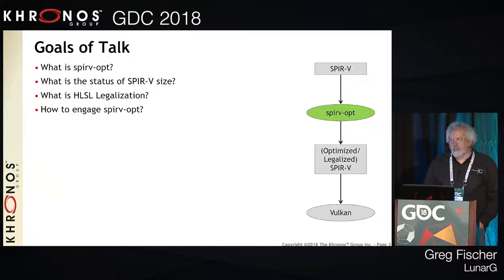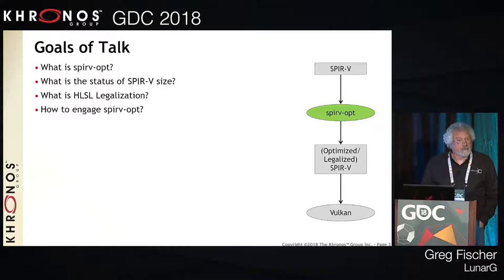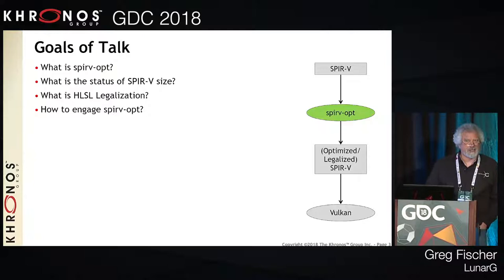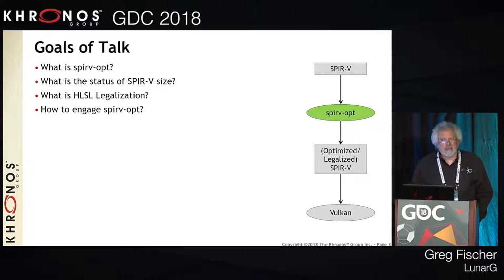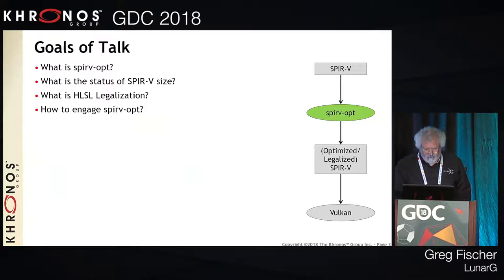The goals of the talk are to answer the following questions: What is SPIR-V Opt? What is the status of SPIR-V size these days? What is HLSL legalization, and why should Vulkan programmers with HLSL shaders be concerned about that? And finally, how to use SPIR-V Opt to alleviate your concerns.